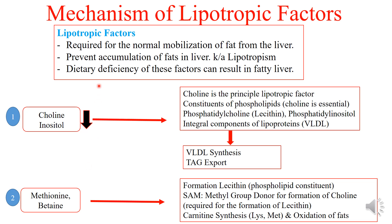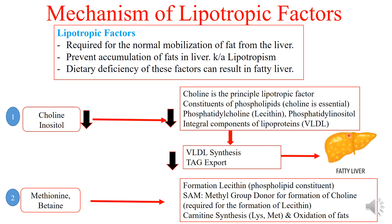When choline and inositol are deficient, there will be decreased phosphatidylcholine, leading to decreased VLDL synthesis and therefore decreased triacylglycerol export, causing accumulation of lipids in the liver and resulting in fatty liver. When methionine and betaine are low, lecithin formation decreases, choline formation decreases, and carnitine synthesis also decreases — leading to decreased oxidation of fats. All of these contribute to fat accumulation in the liver and fatty liver.